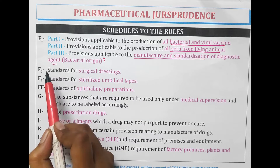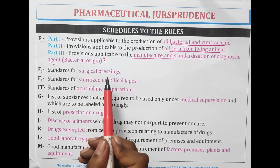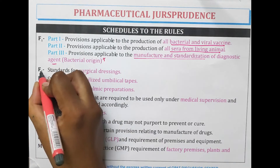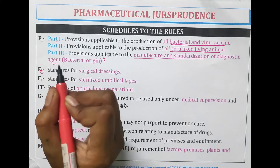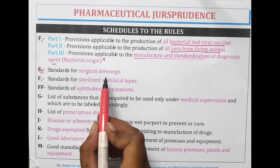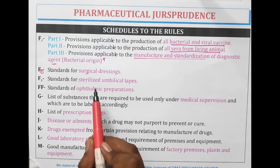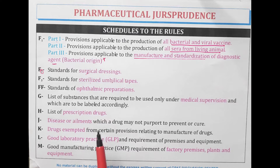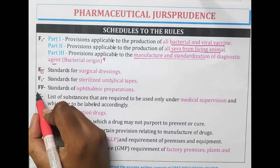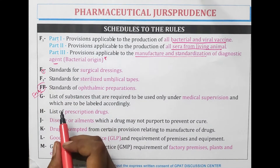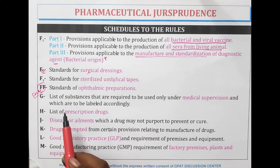Schedule F2 is for standards of surgical dressings — we have two hands and we always do dressing with two hands, so F2 is for dressing. F3 is for umbilical tapes — the standard for standardizing the umbilical tape. Schedule FF — FF for focal, and focal means eye, focal lens. Therefore, FF is the standard for ophthalmic preparations.